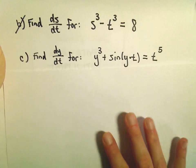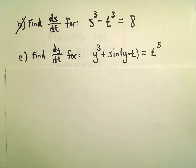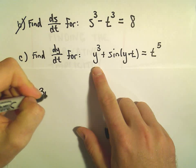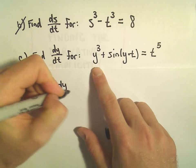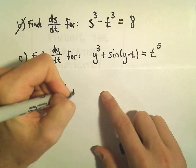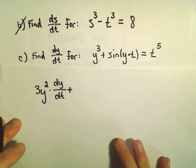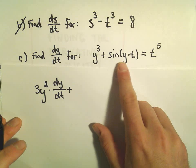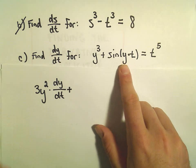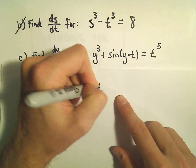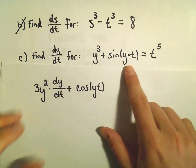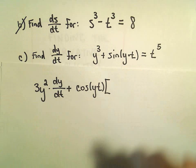So what we have to do in this case again? When we take the derivative of y to the third, we'll get 3y squared, but then we have to tack on our dy over dt. Plus, we have to use the chain rule when we take the derivative of sine of yt. So the derivative of sine is just cosine. We'll leave the inside alone, but then when we take the derivative of the inside, we'll have to use the product rule.